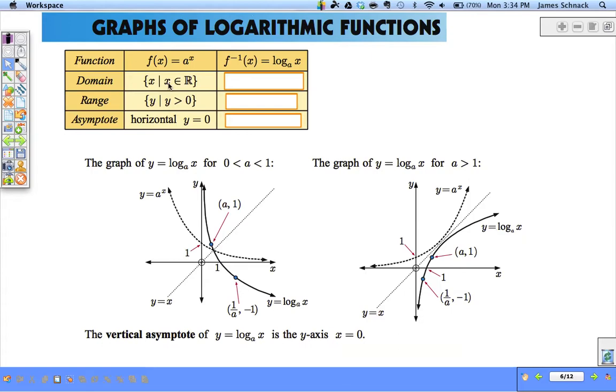The domain is a set of X's such that X is an element of the reals. And the range is the set of all Y's such that Y is greater than zero and they have horizontal asymptote at zero.